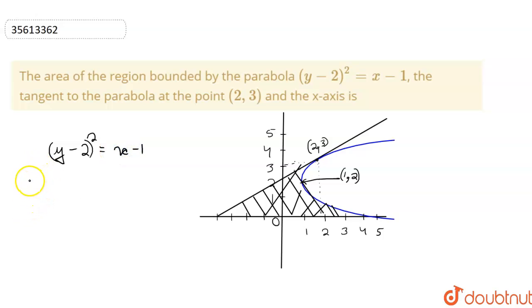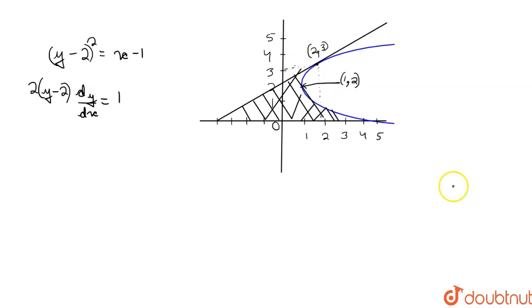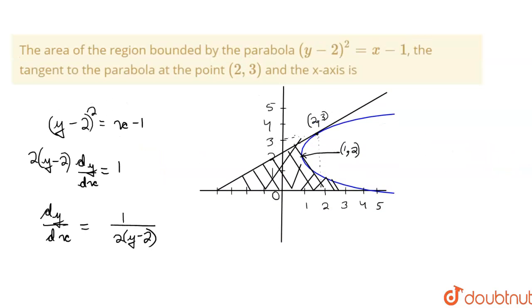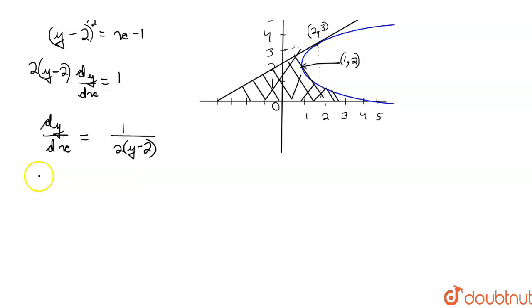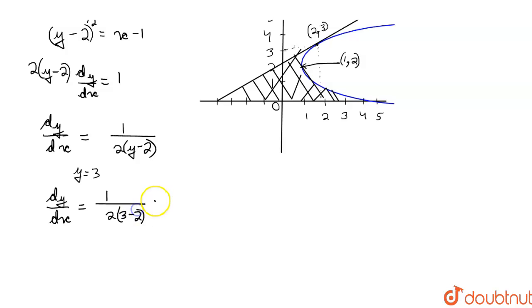We differentiate with respect to x. What we get is: 2(y−2) · dy/dx = 1. So dy/dx = 1 / [2(y−2)]. We need the slope at the point (2, 3), so we put y = 3. dy/dx = 1 / [2(3−2)] = 1/2. So this is our tangent slope.